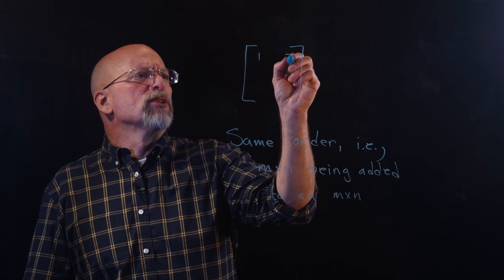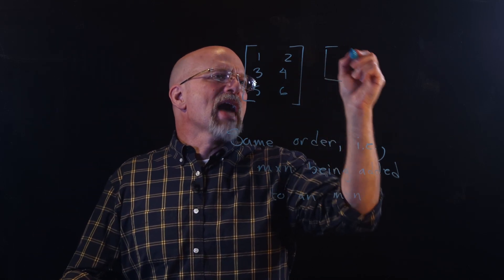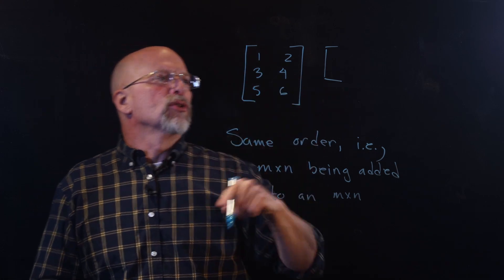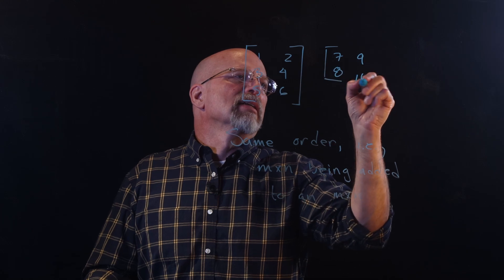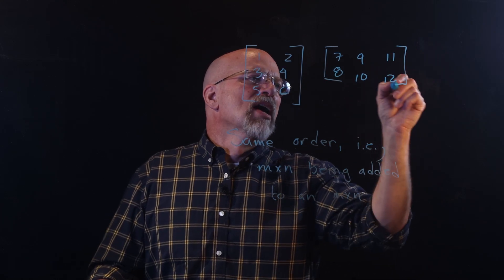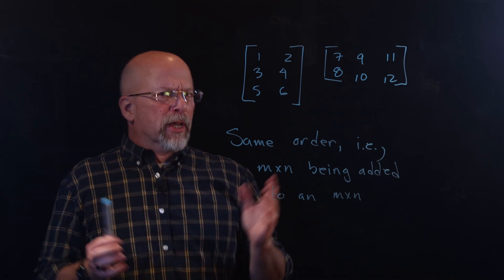Let's assume they're not. What are we going to do? If I've got 1, 2, 3, 4, 5, 6, and I'm adding it—so I've got a 3-row, 2-column matrix—and I'm adding it to 7, 8, 9, 10, 11, 12. I'm adding it to a 2-row, 3-column matrix.